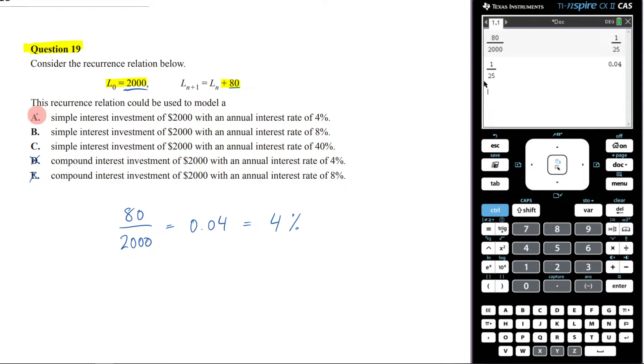So that simply means that we've got a simple interest investment of 2,000 with an annual interest rate of 4%. And remember, we're adding 80 each time. It's simple interest. You're always just earning 4% of that original. This isn't compounding because remember compounding, you're always taking the interest of that previous amount.